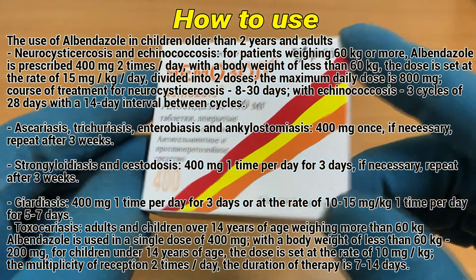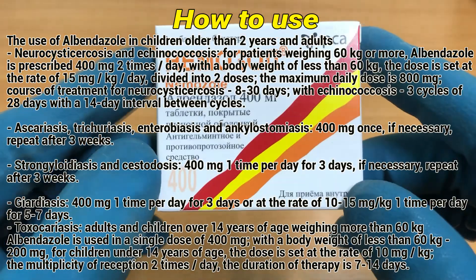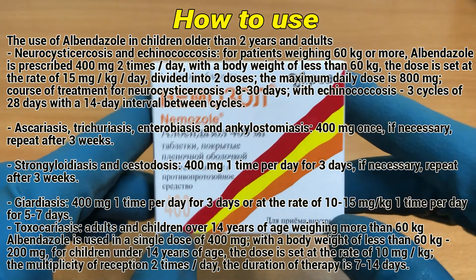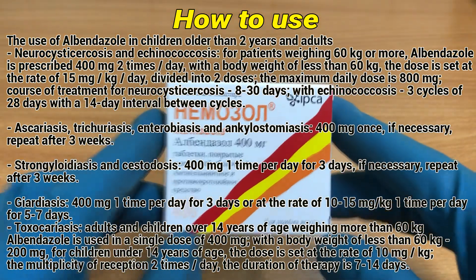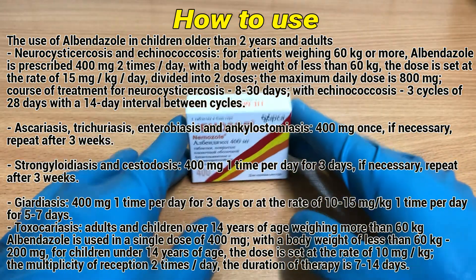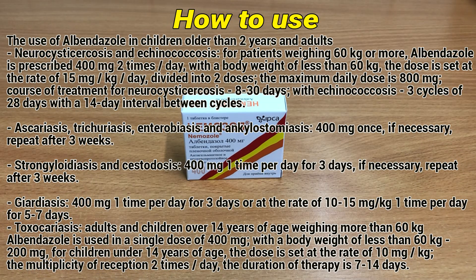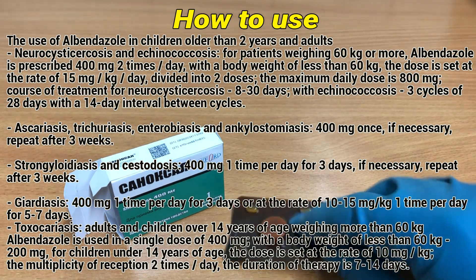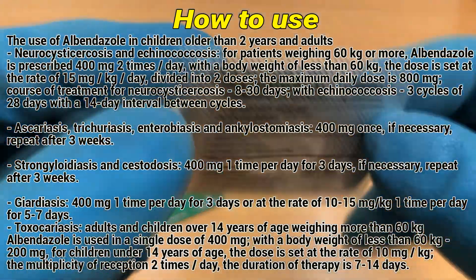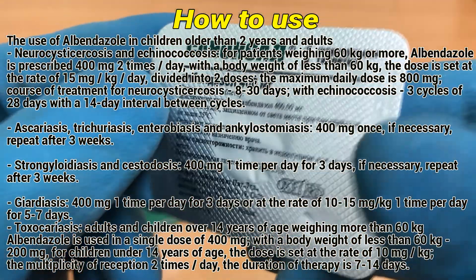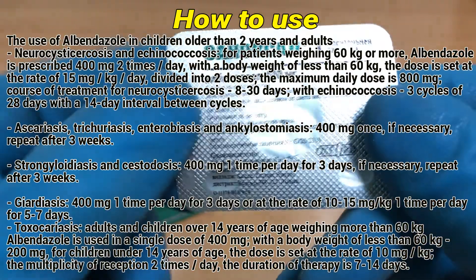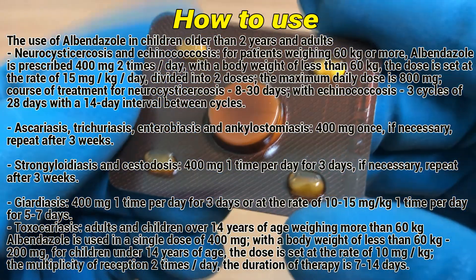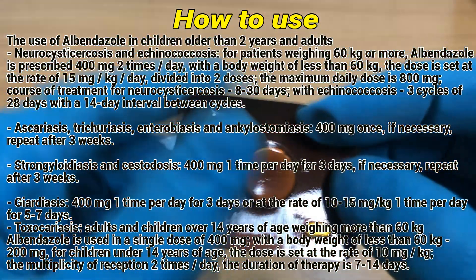Ascariasis, trichuriasis, enterobiasis, and ancylostomiasis — 400 mg once; if necessary, repeat after 3 weeks. Strongyloidiasis and giardiasis — 400 mg one time per day for 3 days; if necessary, repeat after 3 weeks. Giardiasis — 400 mg one time per day for 3 days, or at the rate of 10-15 mg per kg one time per day for 5-7 days.